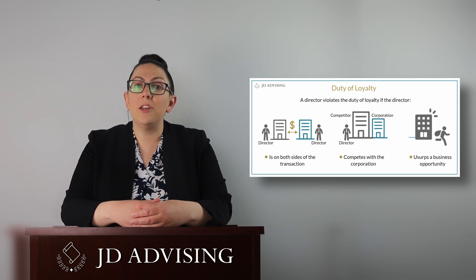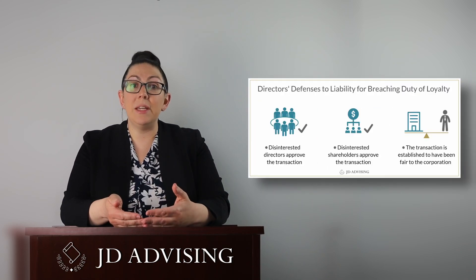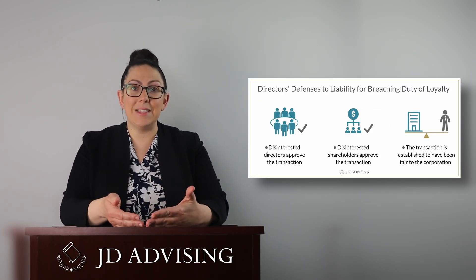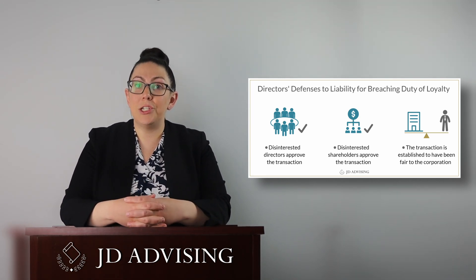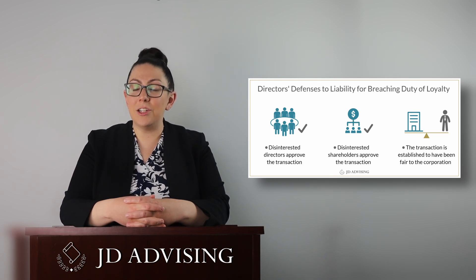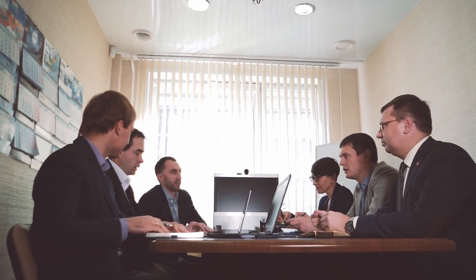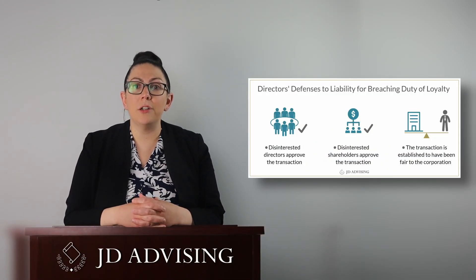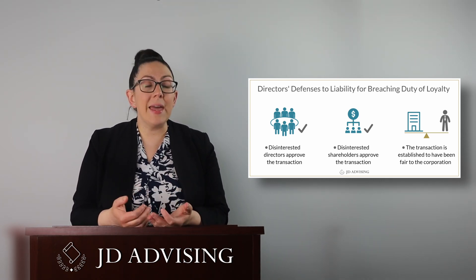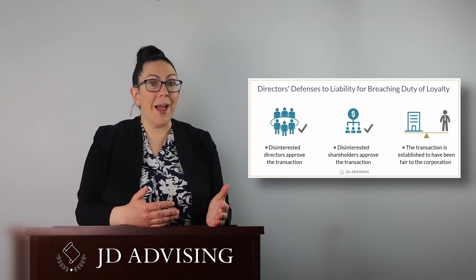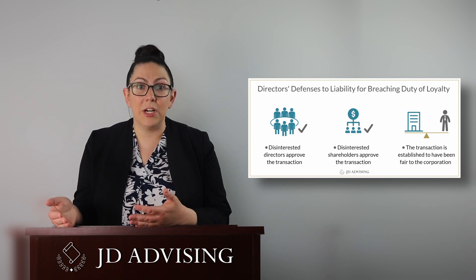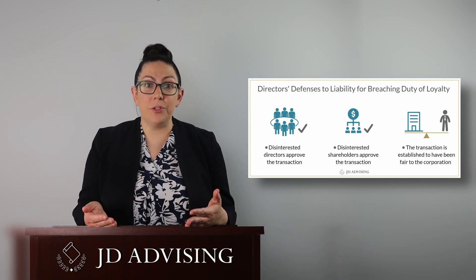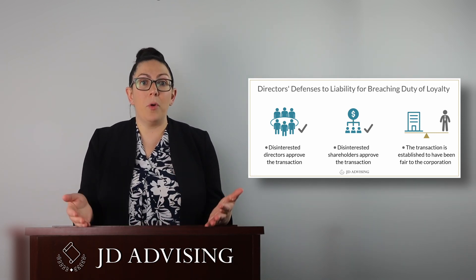Whenever you discuss the duty of loyalty, you should also discuss the defenses to the duty of loyalty. If a director allegedly breaches the duty of loyalty, there are three defenses that could mitigate his conduct: the conduct was approved by disinterested directors, approved by disinterested shareholders, or the transaction was fair to the corporation. For example, let's say a man is on the board of directors and also owns his own office supply company. The corporation is deciding whether to enter into a long-term contract with this office supply company. The man is an interested party because he is acting as a director on one side and stands to make a profit as the owner of the office supply company on the other side. So if he votes on this as a director, he automatically breaches his duty of loyalty since he's on both sides of the transaction.